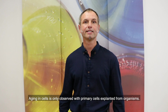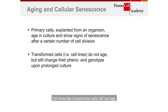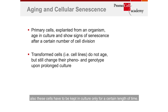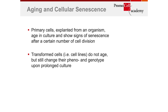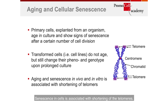Aging in cells is only observed with primary cells explanted from an organism. Cell lines, like transformed cells, would not age; however, they still differ and drift in culture. To avoid the risk of genetic drift, these cells must also be kept in culture for only a certain length of time. Senescence in cells is associated with shortening of the telomeres, though this may not be causative for the phenomenon.